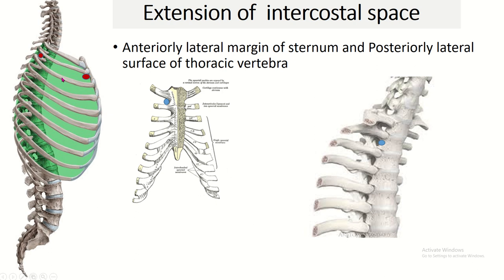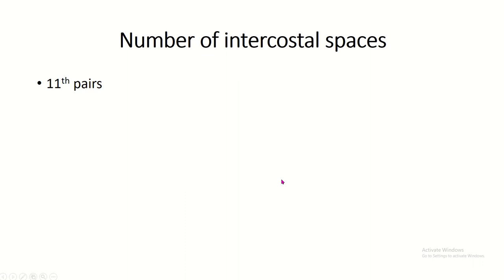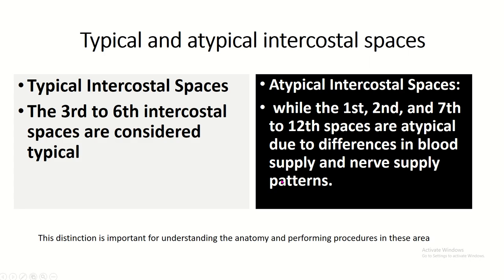There is also an anterior boundary and posterior boundary of the intercostal space. The anterior boundary is the lateral surface of the sternum, and the posterior boundary is the lateral surface of the body of the thoracic vertebra.